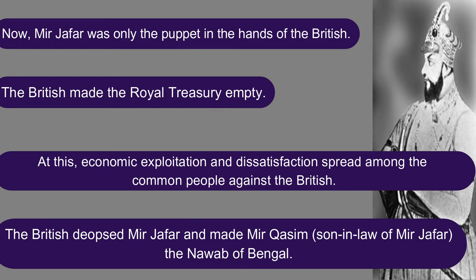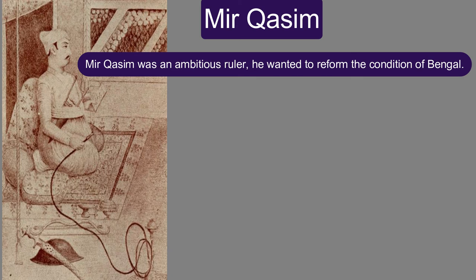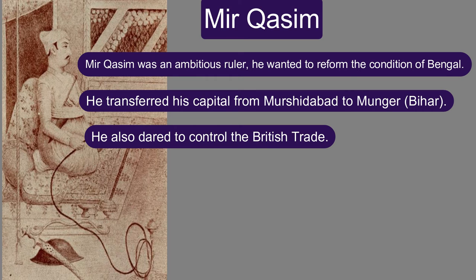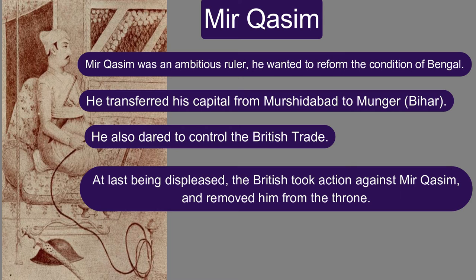At this, the British deposed Mir Jafar and installed Mir Qasim, who was the son-in-law of Mir Jafar, as the Nawab of Bengal. Mir Qasim was an ambitious ruler. He wanted to reform the condition of Bengal. He transferred his capital from Murshidabad to Munger and also dared to control British trade. Being displeased, the British took action against Mir Qasim and decided to remove him from the throne.